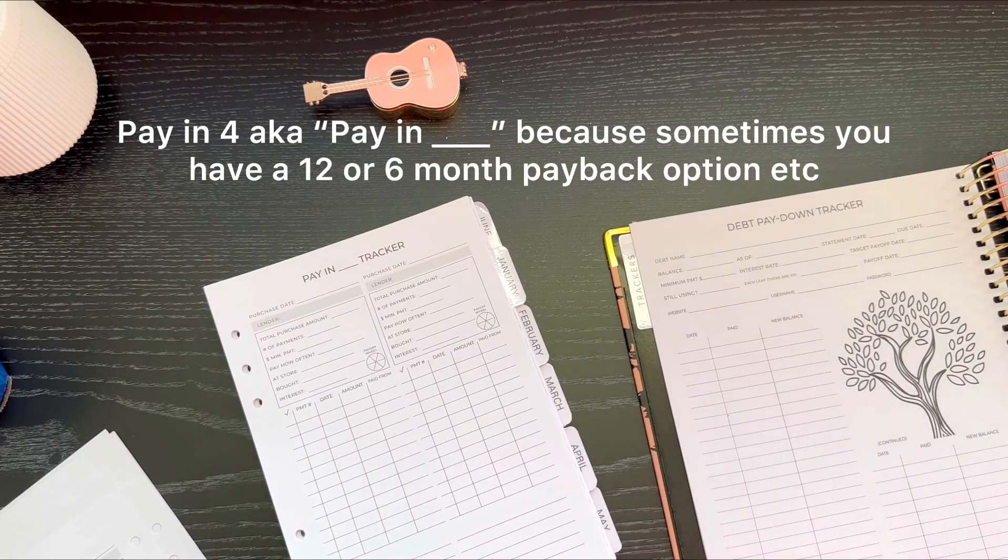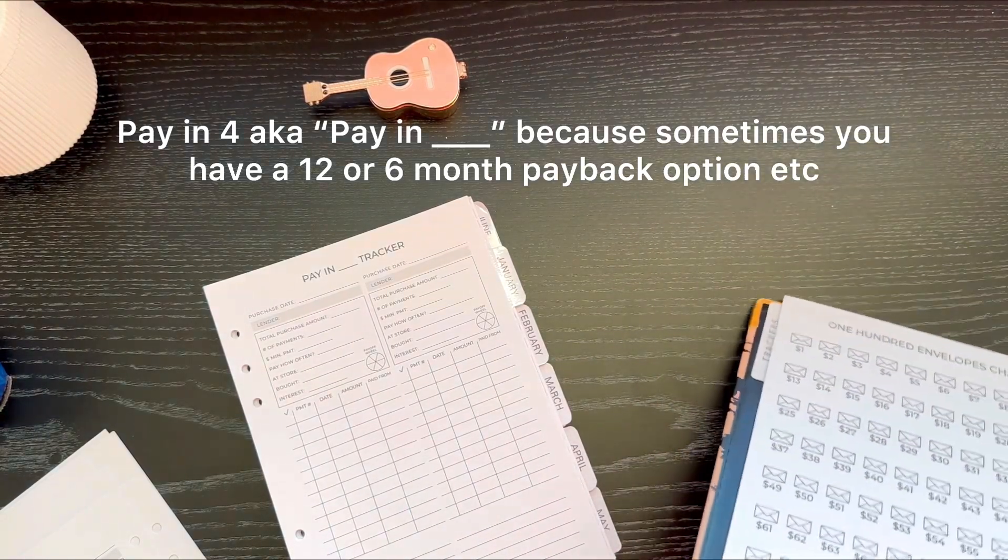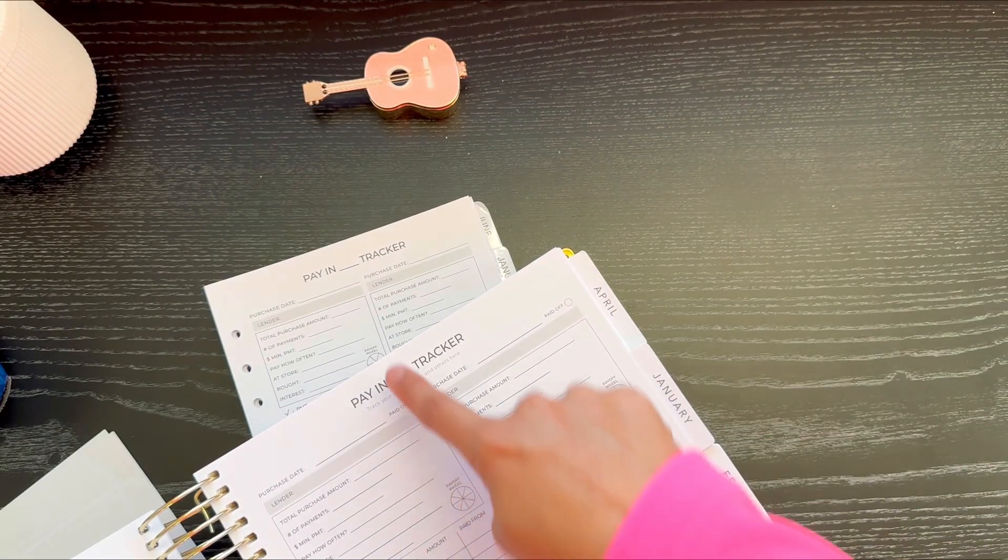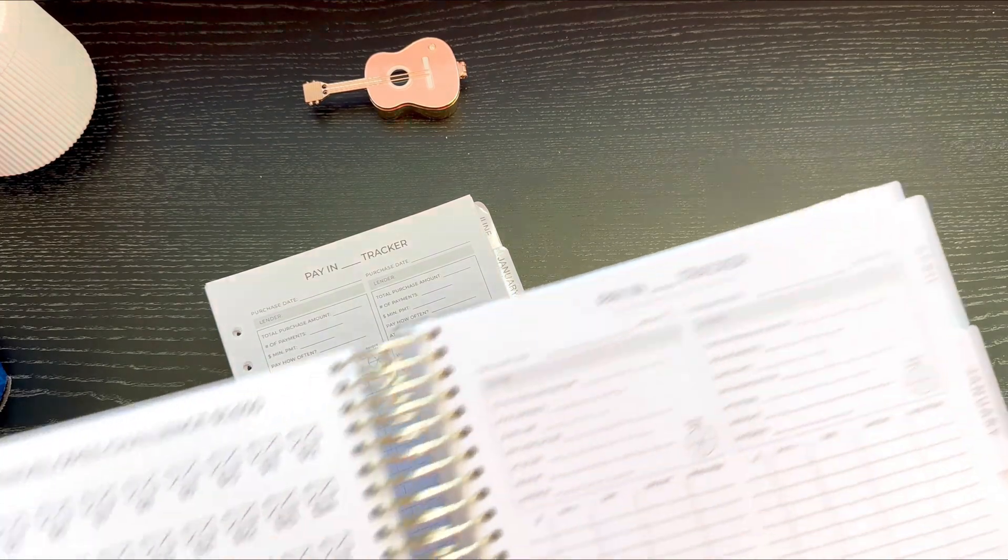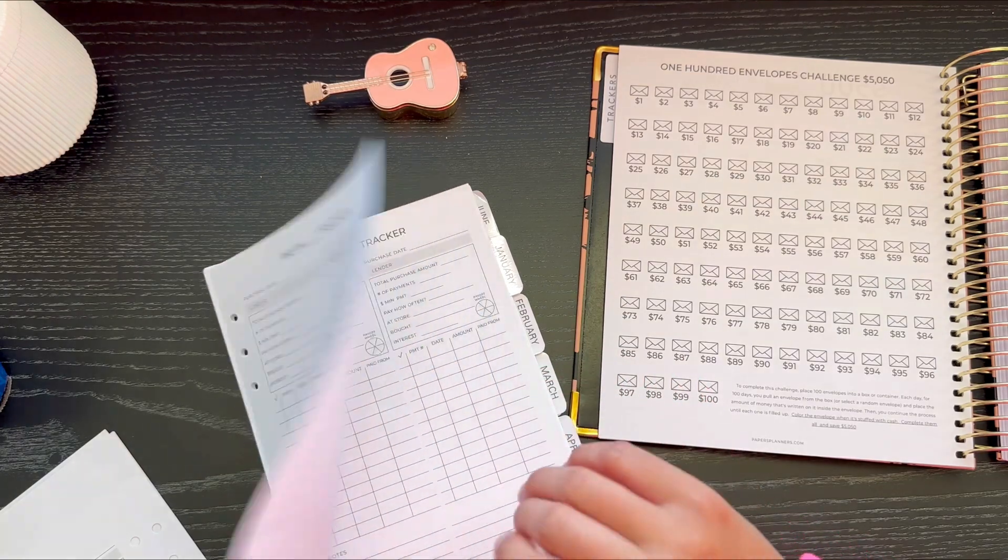You get the pay in four trackers. So here we put the paid off circle check. Here it's not there. I think that's it, that's the only difference in that one. So a few little things in the mini. It's nothing significant that you'd be like, oh, I don't want that one.